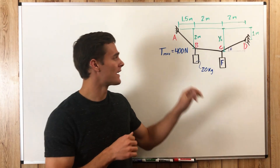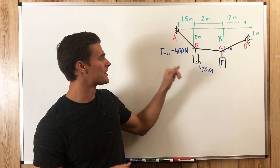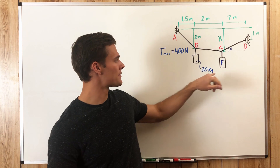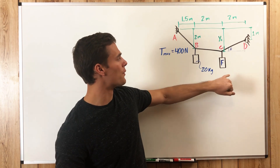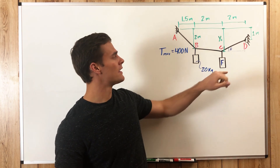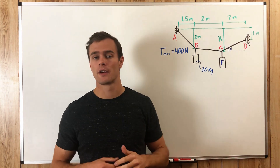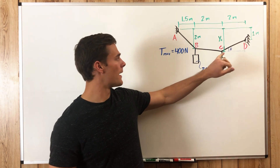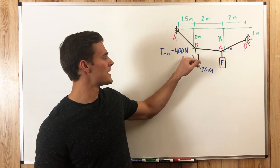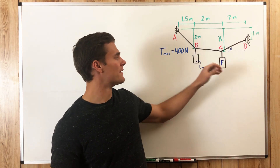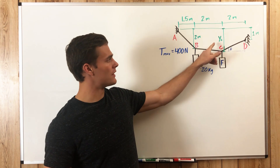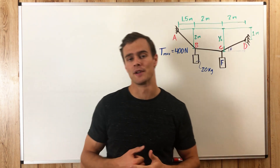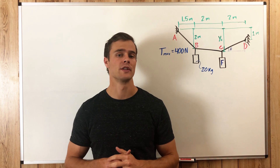Here we have a cable that has concentrated loads on it — one of 20 kilograms and one that we need to find the mass of — in order for there to be 400 newtons of tension in one of these segments. We also need to find the sag at point C, and that's what we're going over in this video.